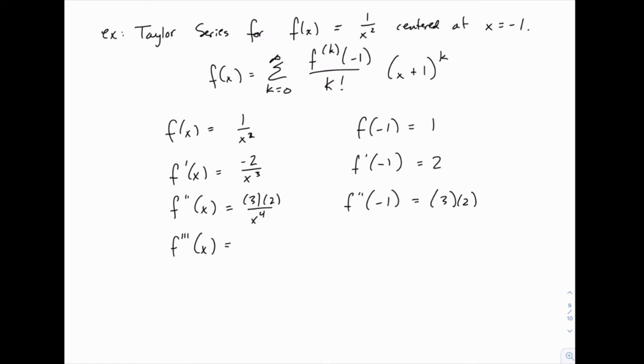We'll do the third derivative. This gives us -4 × 3 × 2 divided by x^5. And when we plug in -1, that denominator is -1 again, making the whole thing positive.